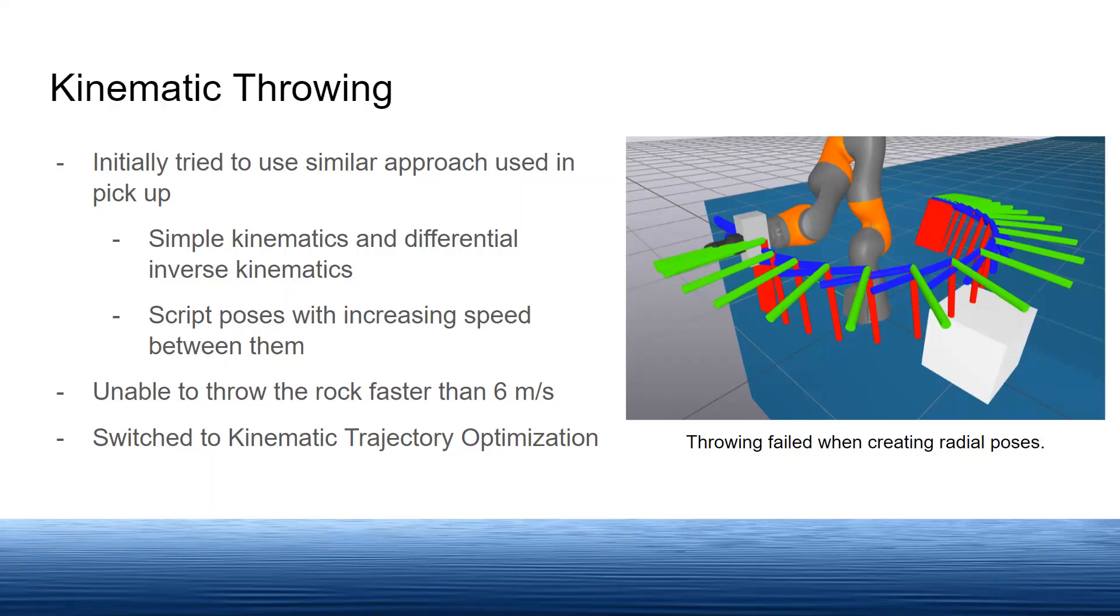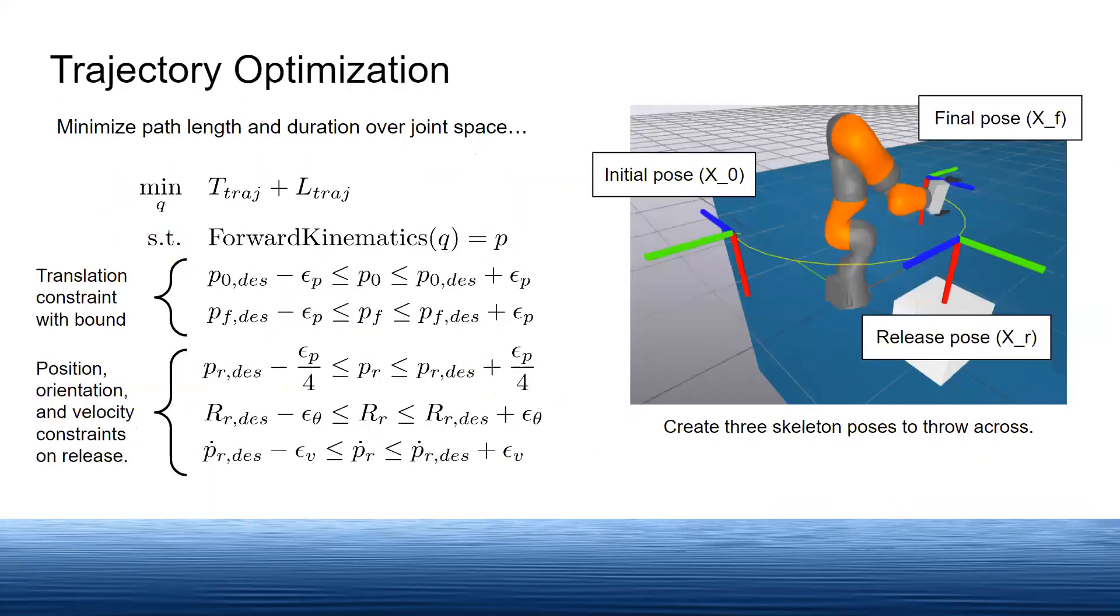To overcome this, we switched to kinematic trajectory optimization. We knew we wanted a similar radial throwing trajectory. Specifically, we wanted the trajectory to pass through a release pose and a final pose as shown in the image.